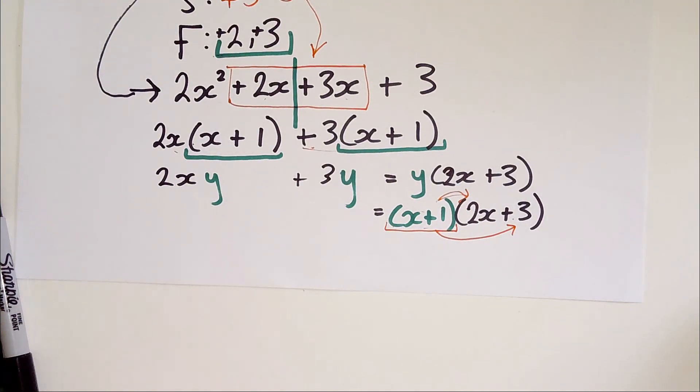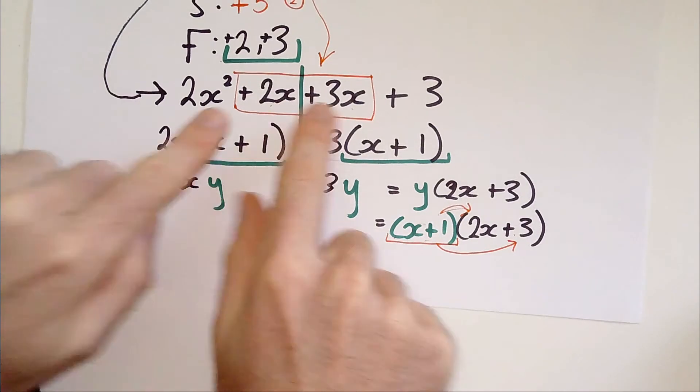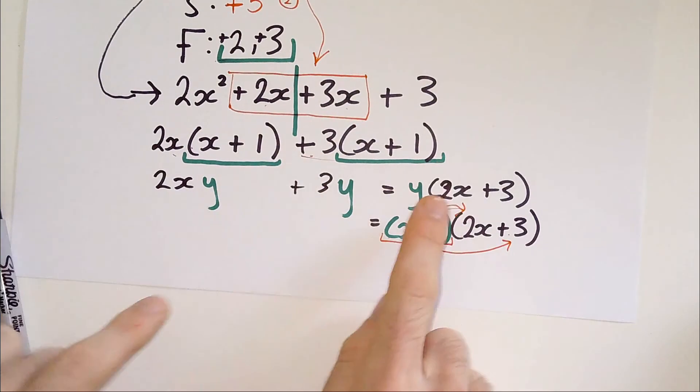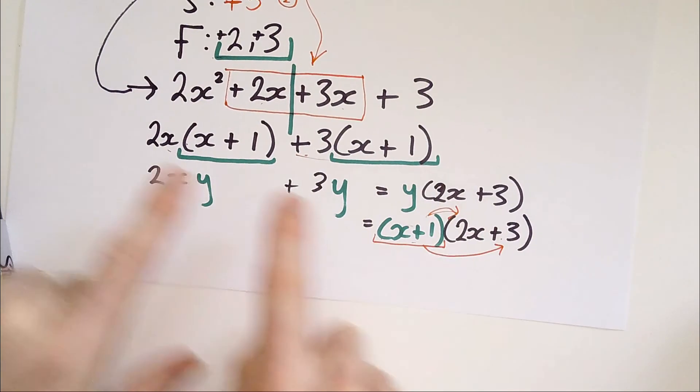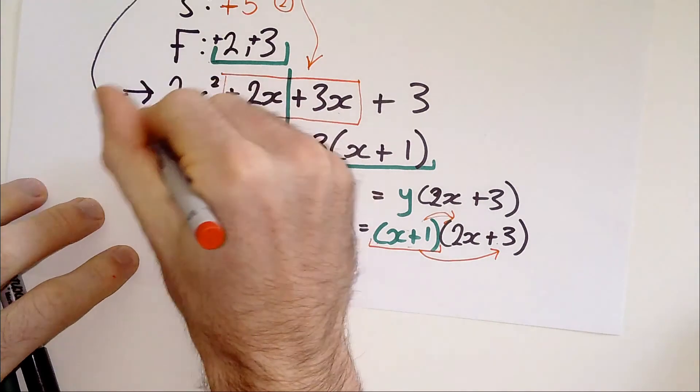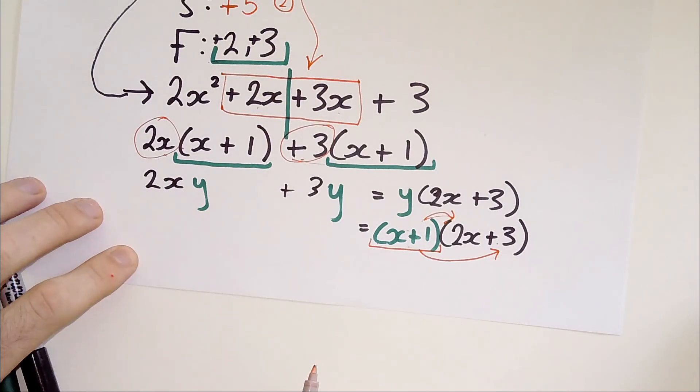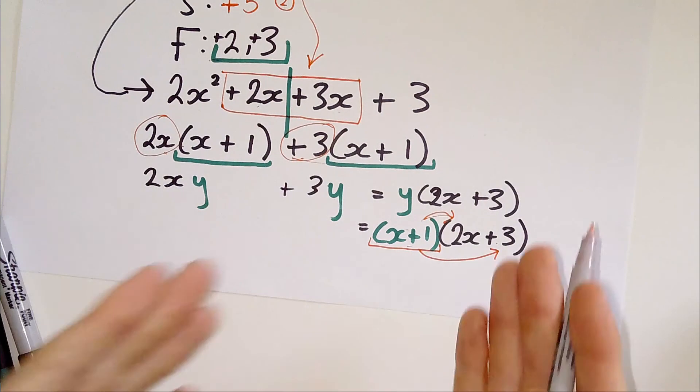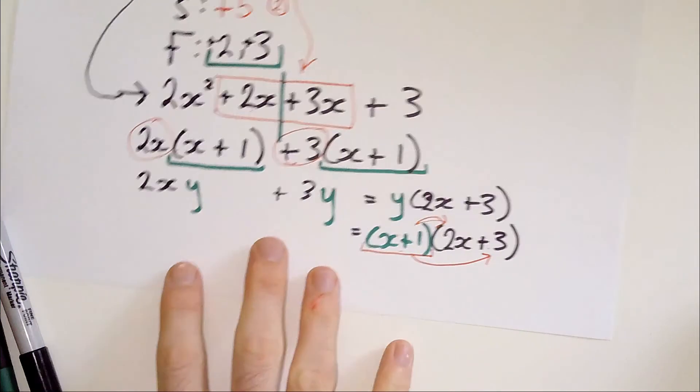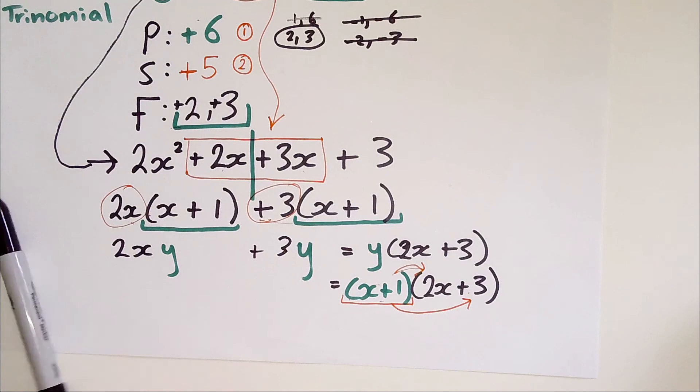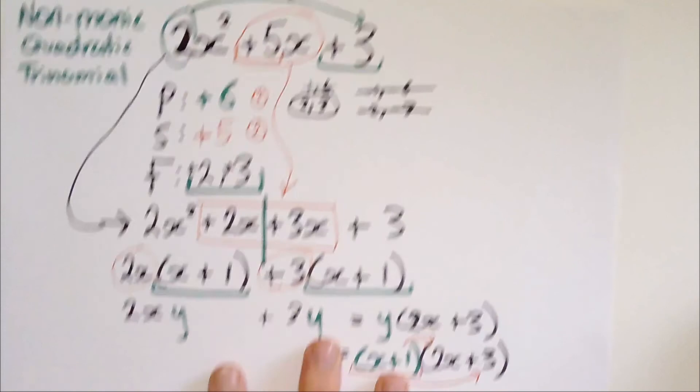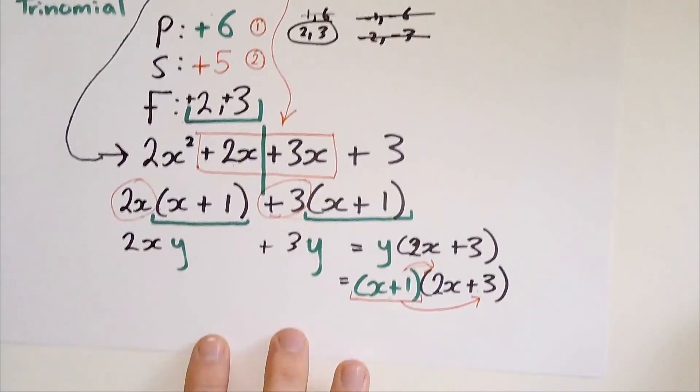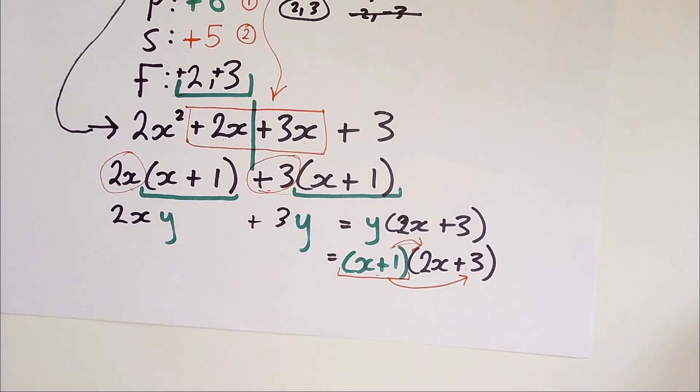To give you a simpler summary, once you split up the terms here and factorize the two halves, you put the bracket that is the same as one bracket, which is X plus one, and you put the other two terms, two X and plus three, in a separate bracket. That is how you factorize a non-monic quadratic trinomial. The best way to understand this is to practice a few times. Thanks so much for watching. I'll see you in the next video.